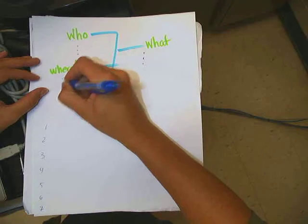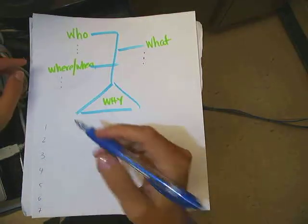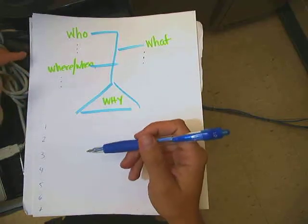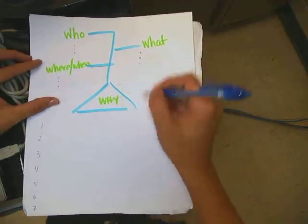Where and when is a little more ambiguous. It might be where, like setting, time period, how old the characters were, if there were flashbacks. Where and when is really flexible depending on the text you're working with.